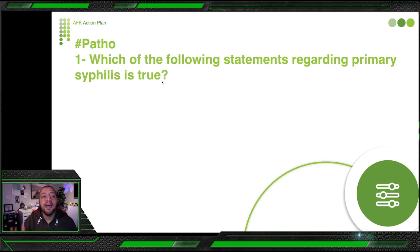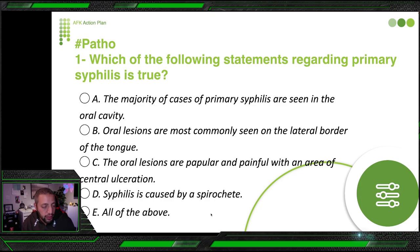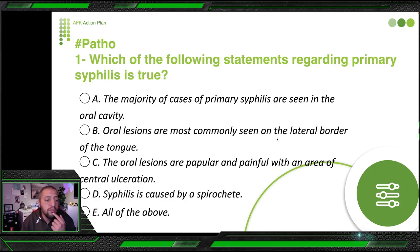Question: 'Which of the following statements regarding primary syphilis is true?' This is a very simple question about primary syphilis, and you will face this situation a lot in the exam — when you get the question you feel like it's so easy, and then you read the answers and think 'what is that?' Options include: majority of cases are in the oral cavity; oral lesions on the lateral border of the tongue; oral lesions are papular and painful with central ulceration; syphilis is caused by spirochetes; or all of the above.